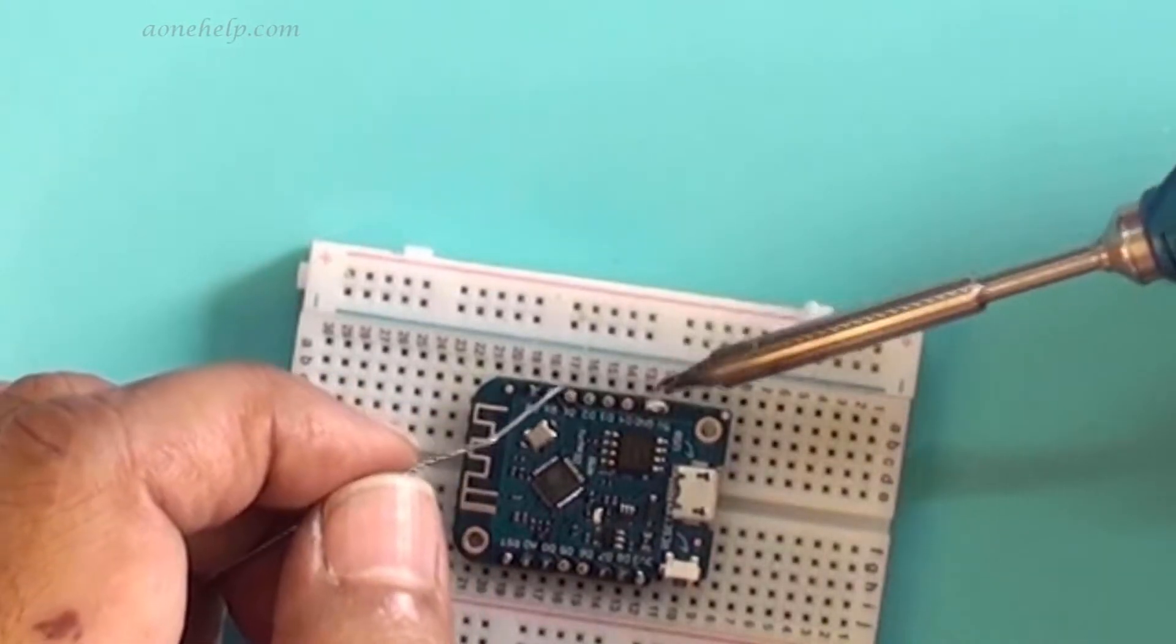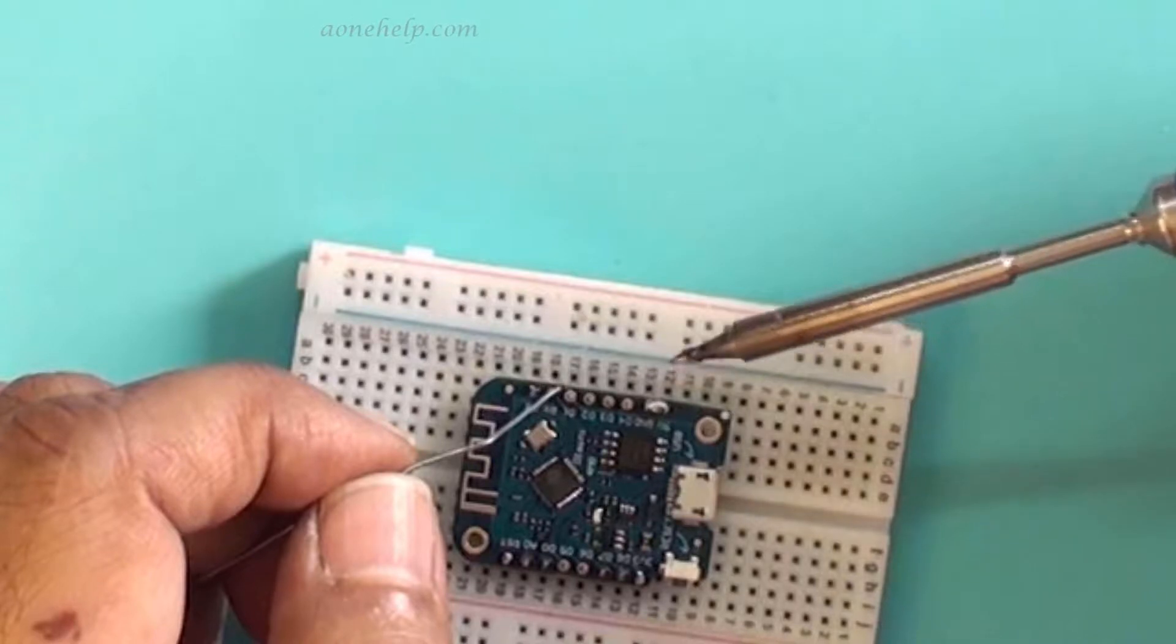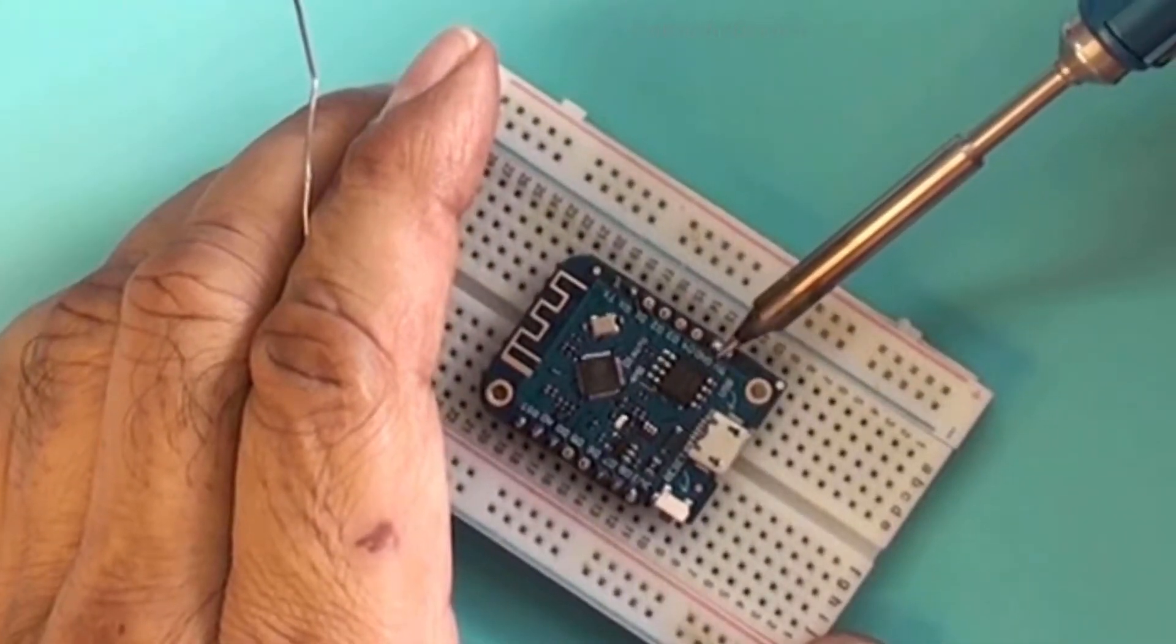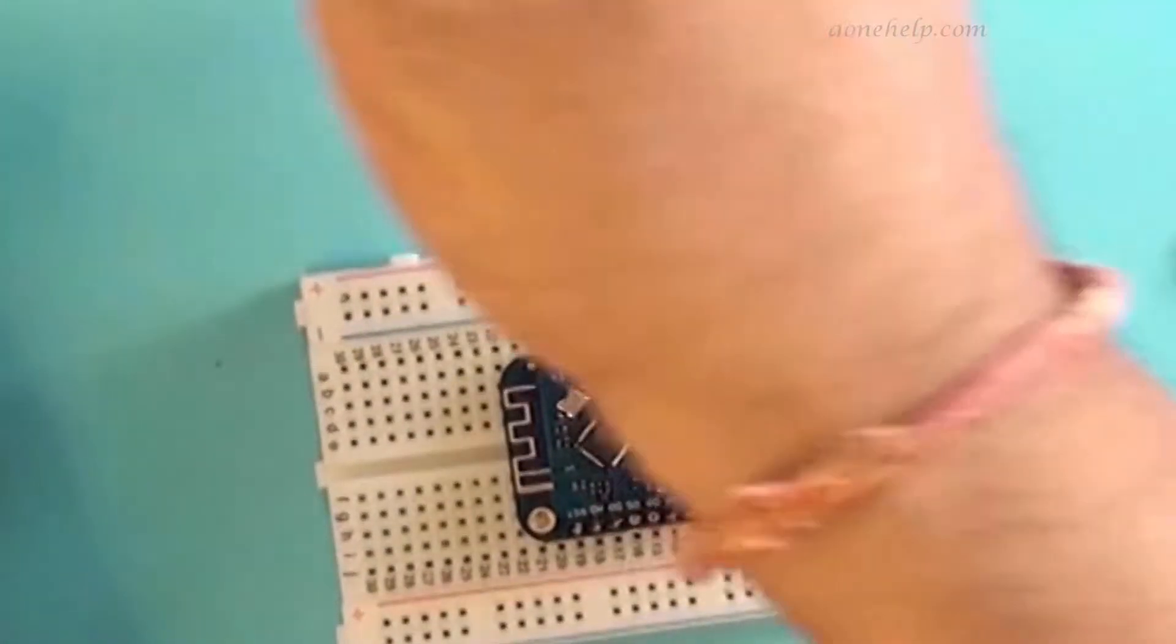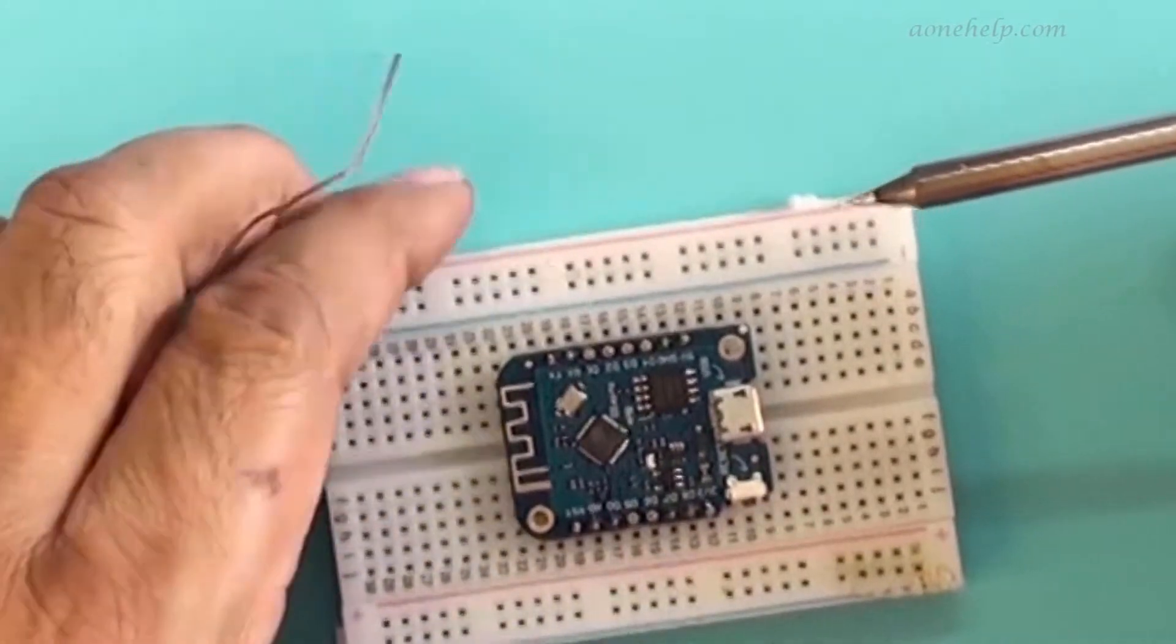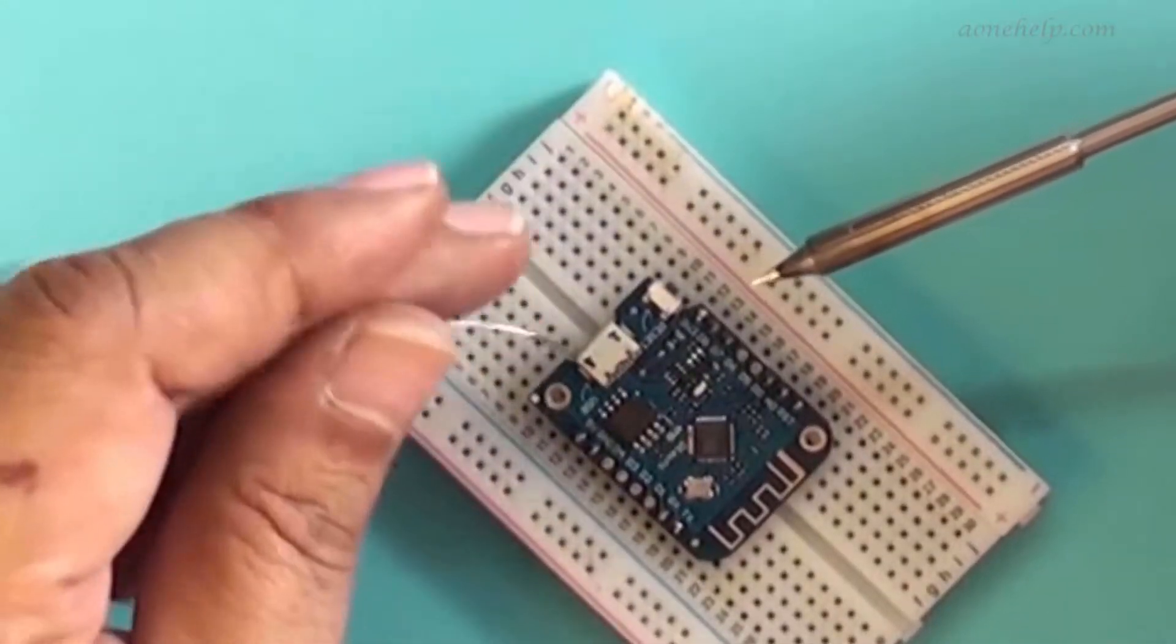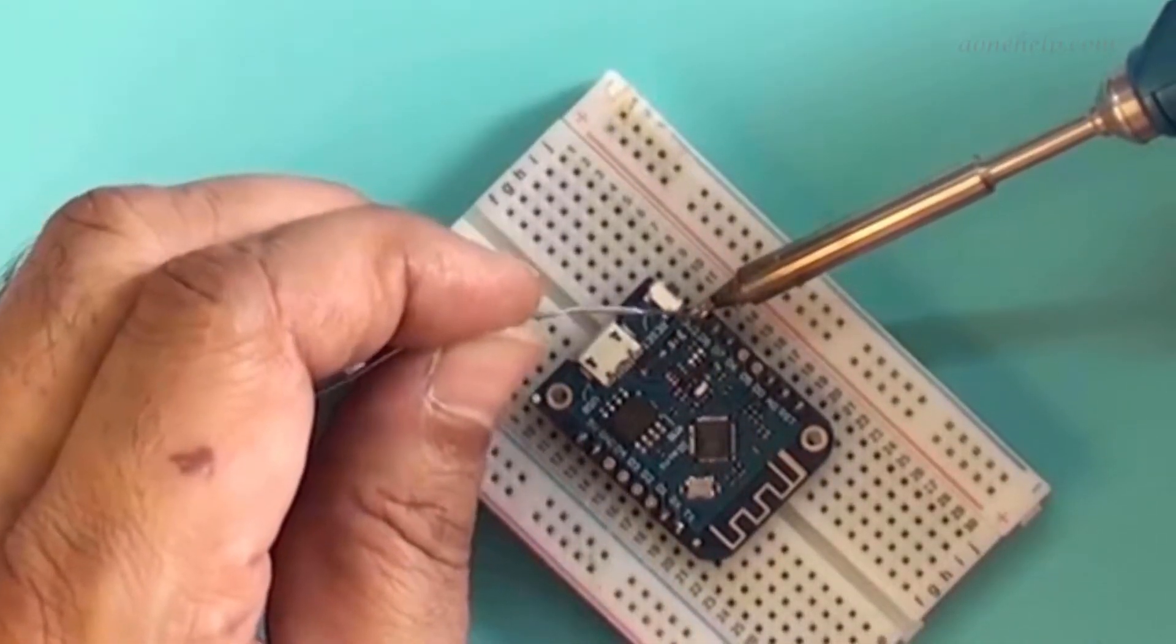Here we can see that there is a bridge formation due to excess quantity of solder. To remove the bridge, let's clean our soldering tip of any extra solder. Now let's place the bit of the soldering iron in between both the pins and pull it upwards. We can see that the bridge is removed. In case the bridge still persists, we can re-clean the tip and remove the bridge.